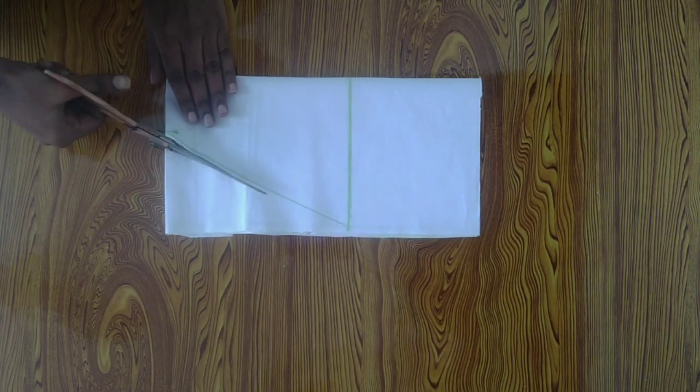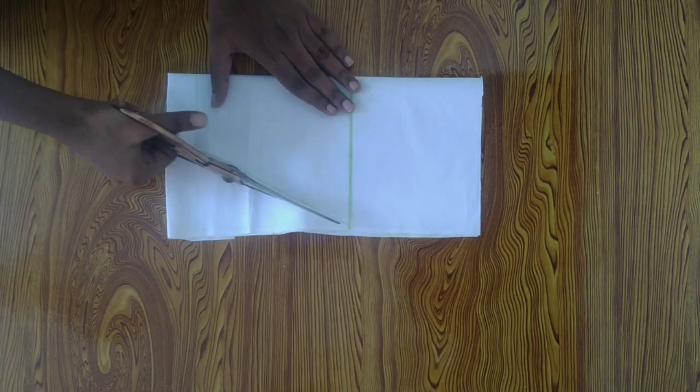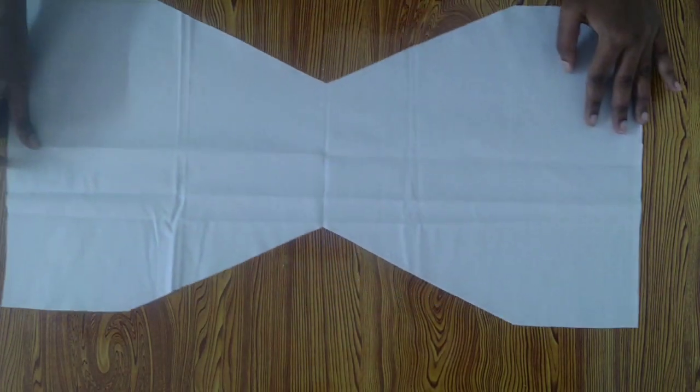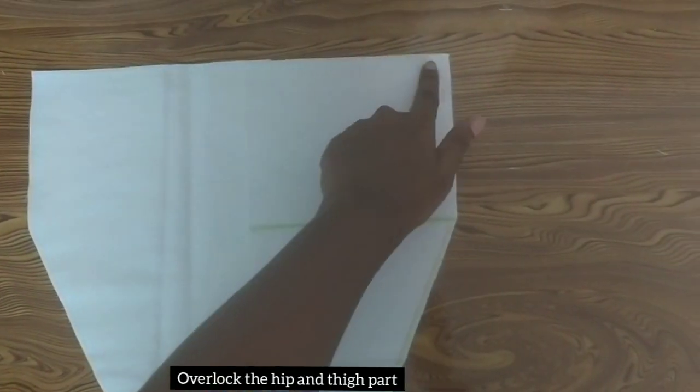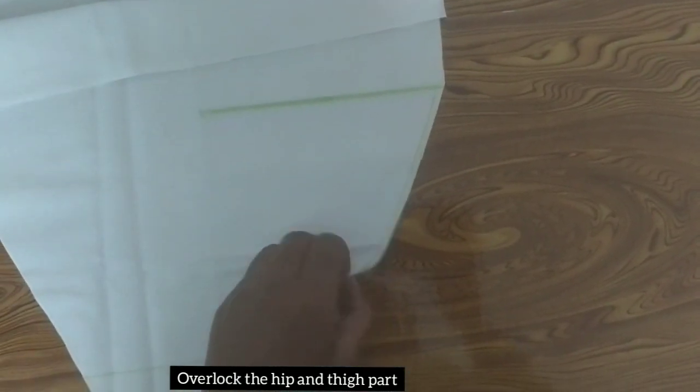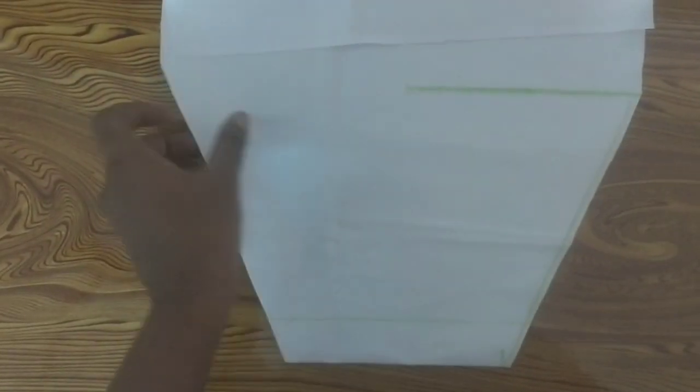This is very easy. You can stitch it in 5 minutes. We are going to overlock the sides. We are going to double fold.